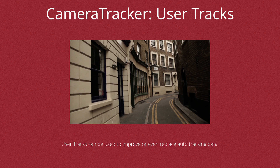Hello, this is Matt Leonard for The Foundry, and in this video on Nuke 8, we're going to be looking at working with user tracks in the camera tracker. User tracks can be placed manually rather than being automatically seeded by the camera tracker, and can be used to improve or even replace the auto-tracking data entirely. They can also be used to link unmatched reference frames together when tracking stills.